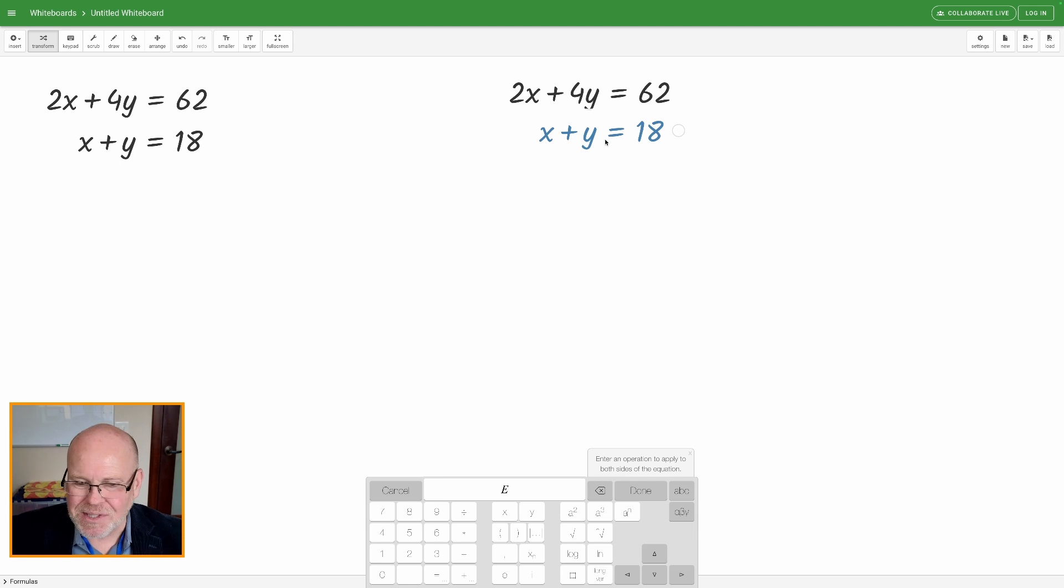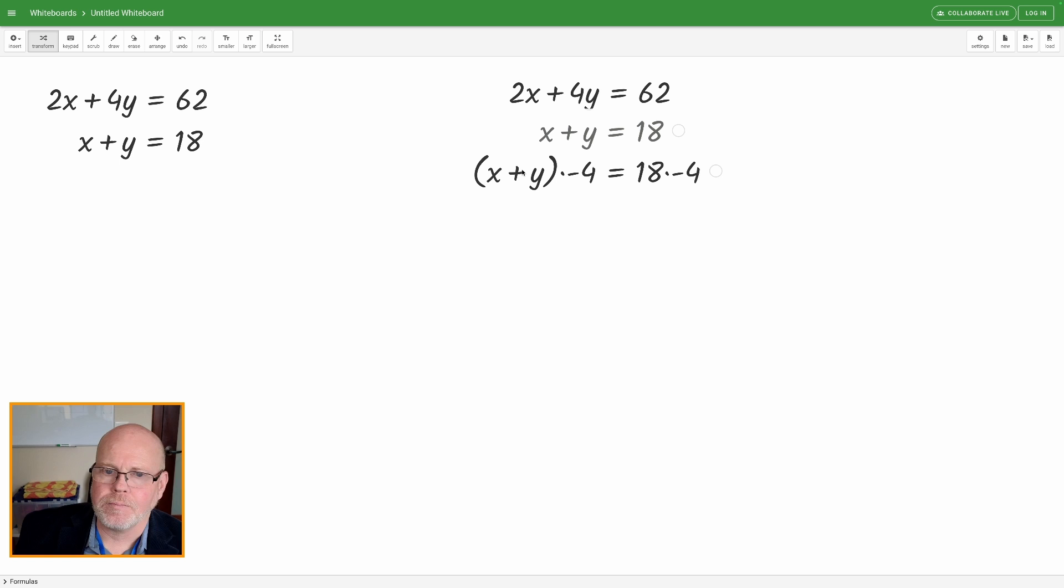So I'm going to click on that equal sign and I'm going to multiply by negative 4. And then I'm going to do some simplification. So I'm going to drag this accordion up here and it's going to stay there. It's not going to continue feeding down. There we go.